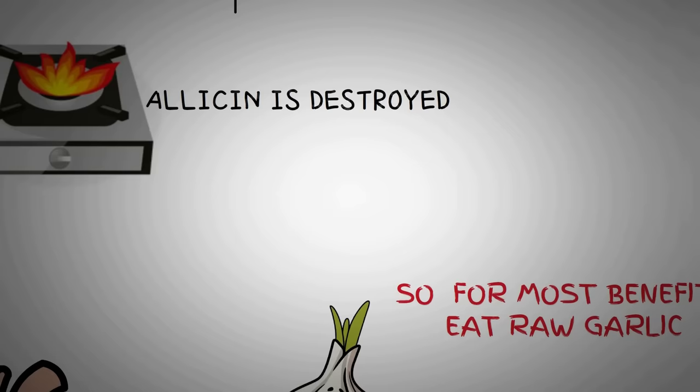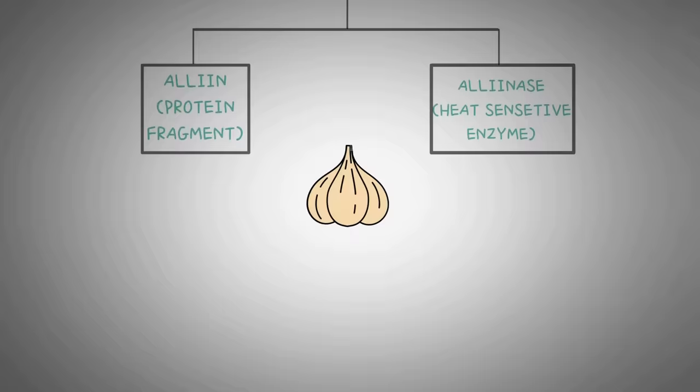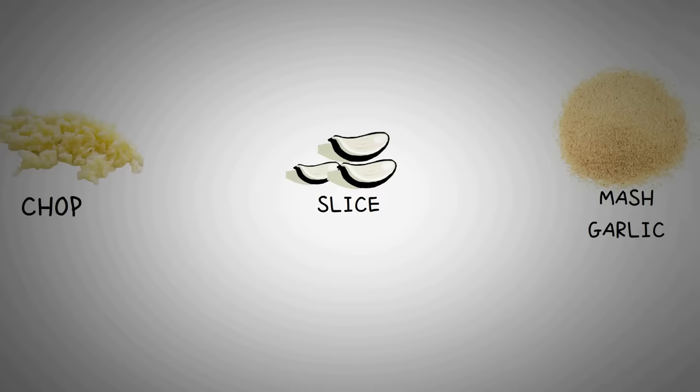Allicin is created when two separate ingredients in garlic connect with each other. One is a protein fragment known as alliin and one is a heat-sensitive enzyme known as alliinase. In the intact clove, these substances are isolated in separate compartments and do not co-mingle with each other until we slice, press or chew the garlic and rupture the barriers between them. It has been found that heating garlic immediately after crushing or slicing can destroy the heat-sensitive enzyme, which results in allicin not being created.